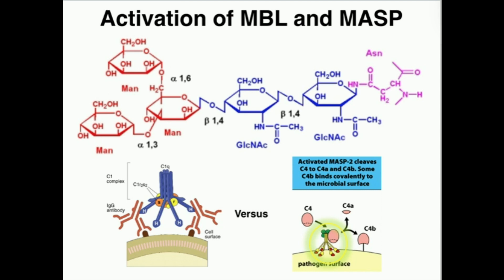When C1 bound the antibody, it became activated and split C4. In exactly the same way, when mannose binding lectin binds mannose on the pathogen surface, MBL undergoes a change in conformation, which causes a change in conformation of the MASPs — the mannose binding lectin associated serine proteases. Those MASPs then split C4 into C4A, which floats away, and C4B, which remains bound to the surface of the pathogen.